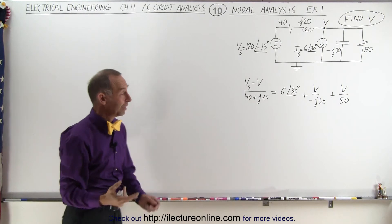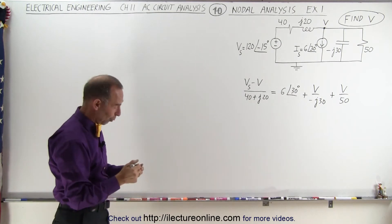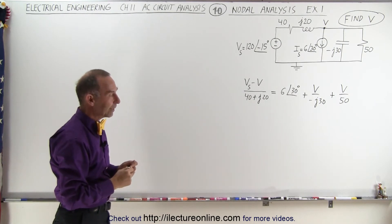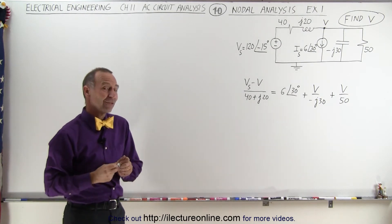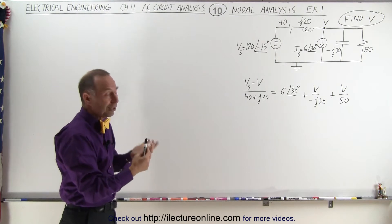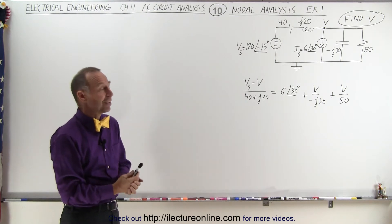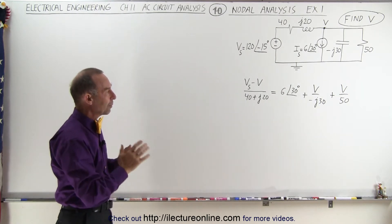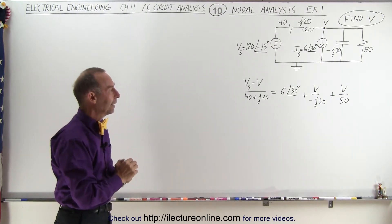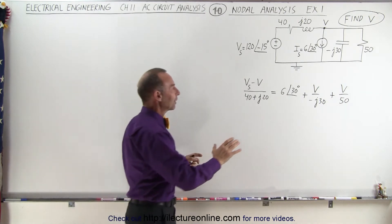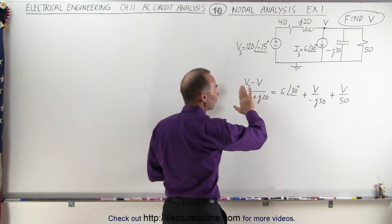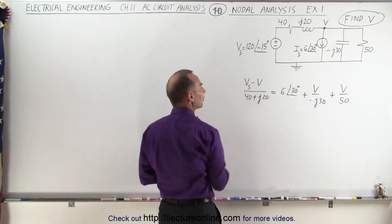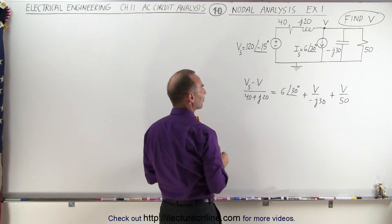So this is the current going into the branch, and these are the three currents leaving the branch. Now all we have to do is solve this for V. We have to be careful here — the way we're going to do that is to get all the terms with V on one side of the equation, and all the terms without a V on the other side.